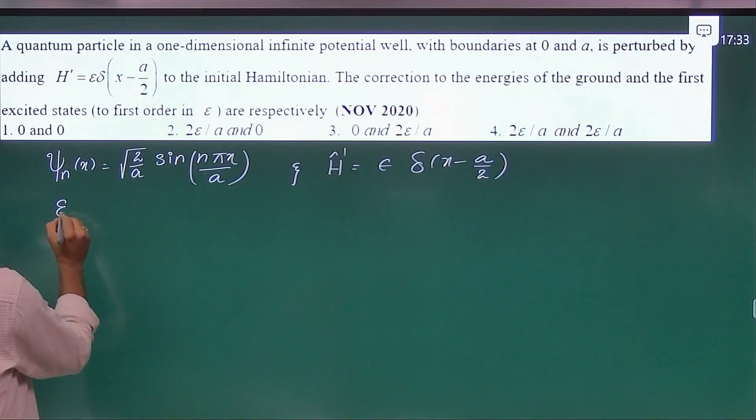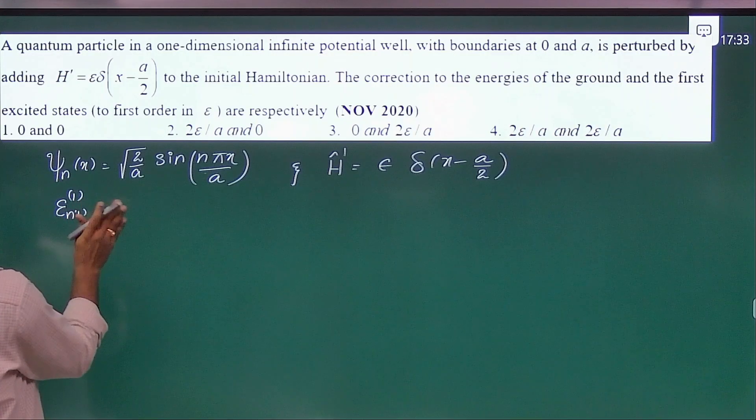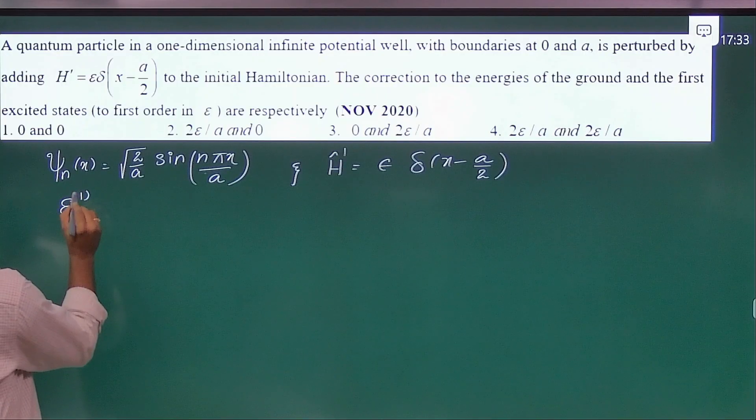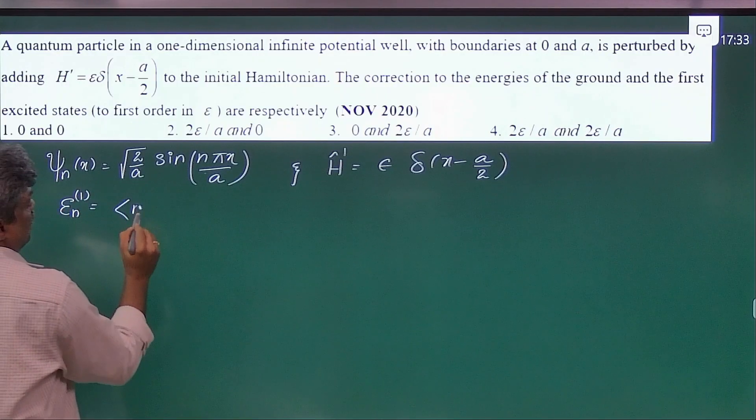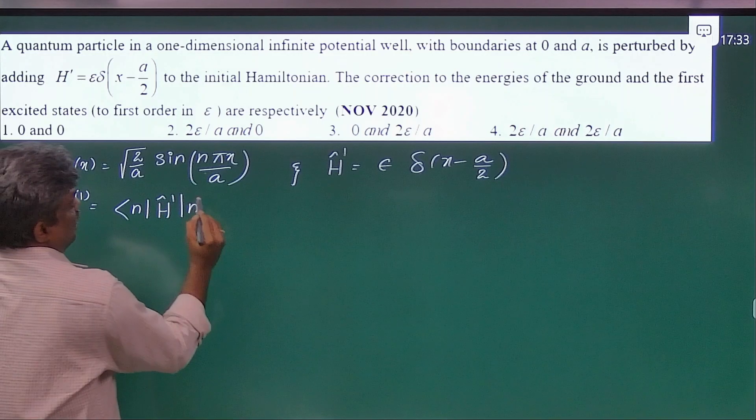Now for the nth state correction to the energy, the first order correction to the energy of the nth state is given by simply n h prime n.